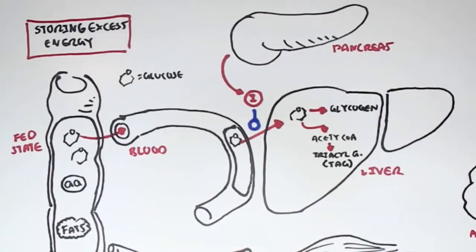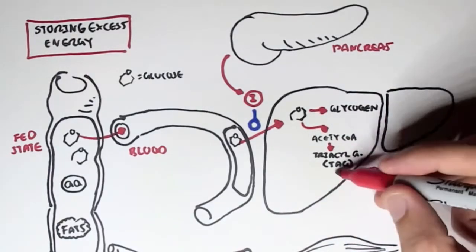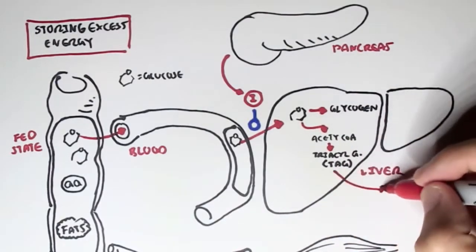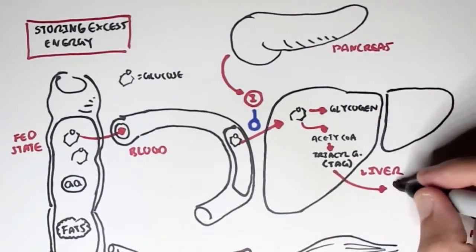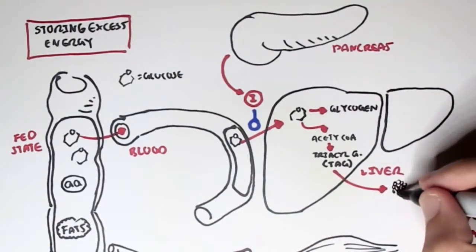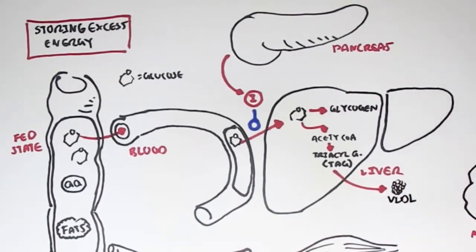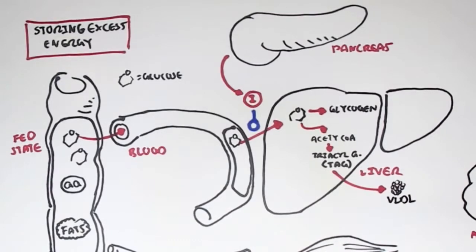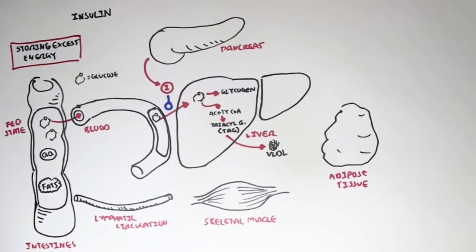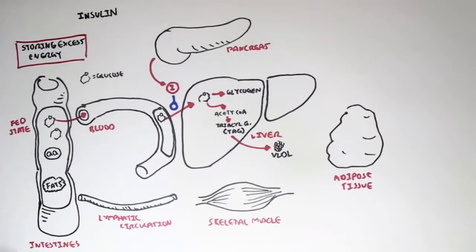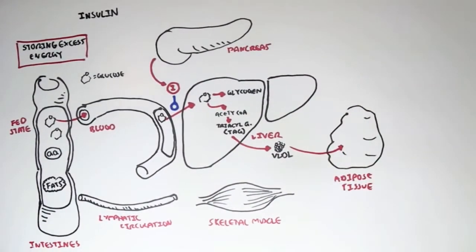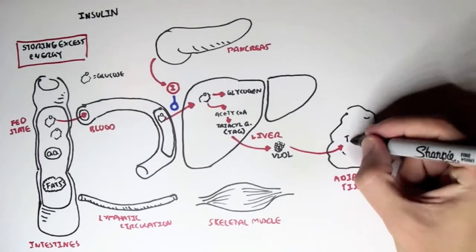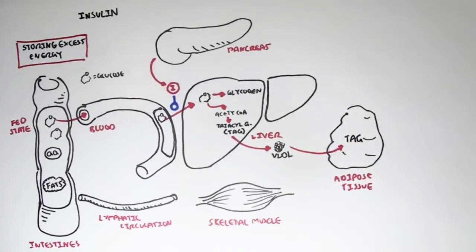Insulin will promote acyl-CoA to triacylglycerols, and then triacylglycerols can be packaged up into very low-density lipoproteins, which can then be stored as triacylglycerol in adipose tissue. So insulin does all these things.